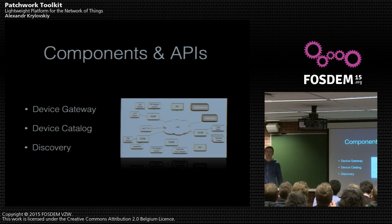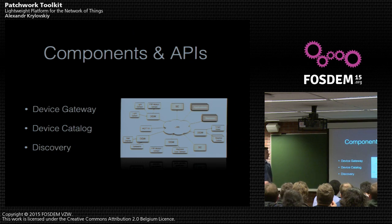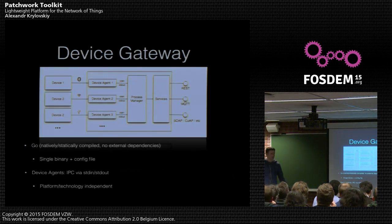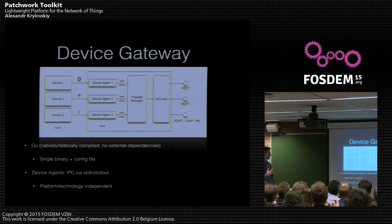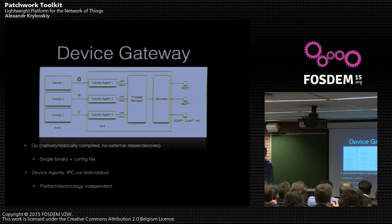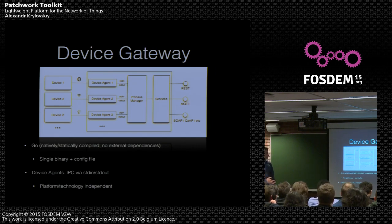The vision of Patchwork as a network of things is that you have your network with several gateways connected to several devices — it can be your smart home, smart office, or something like that. There are several components including the Device Catalog, which you can have one of for your network so you have information about all devices published there, and there are mechanisms for discovery. The Device Gateway architecture has your devices on the left communicating via their native protocols — Bluetooth, Wi-Fi, USB — then device agents which are your software that communicate with devices via native APIs and then communicate to the Device Gateway via standard input and output. In the end, you expose these devices using protocols like REST and MQTT.